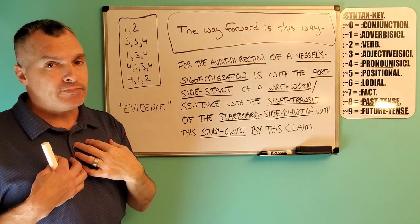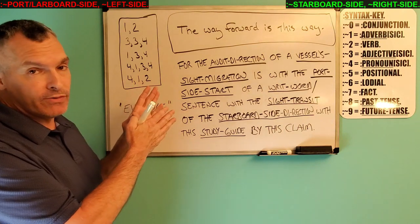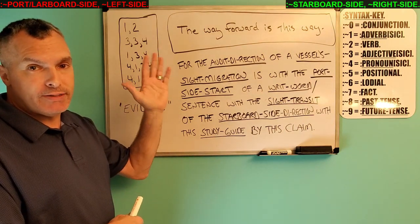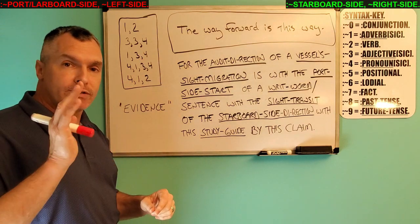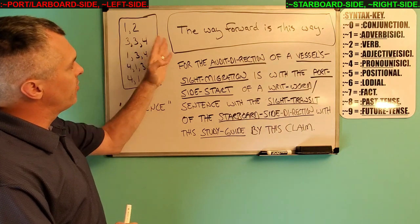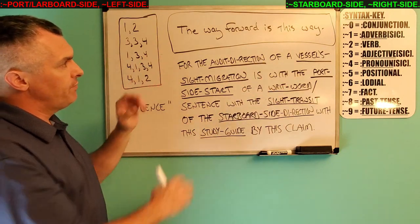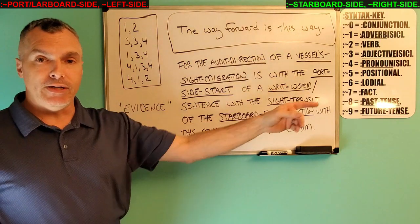Now I'm a vessel. I'm looking at this. My vessel's port side is here. My vessel's starboard side is here. So I'm reading from the port side toward the starboard side. Left to right. That's how I'm reading it.